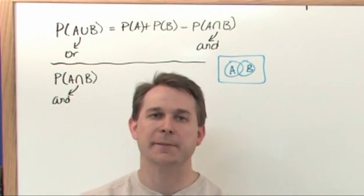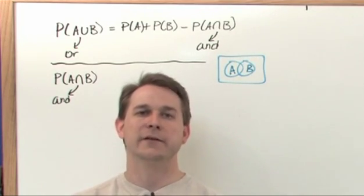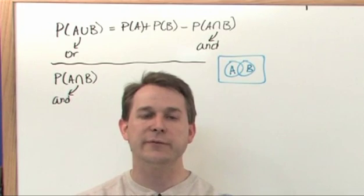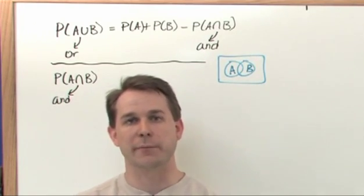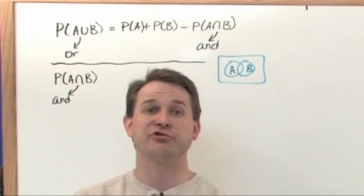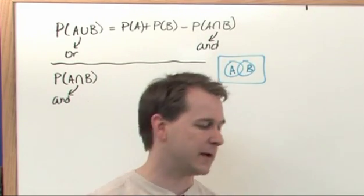They both have to line up and happen at exactly the same time. So the total probability of those two things and it together should be lower than their individual probabilities because now I'm putting the constraint on both of them having to occur at the same time.